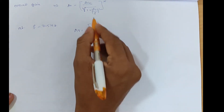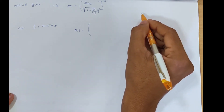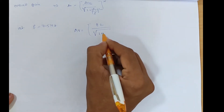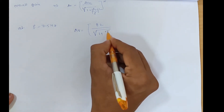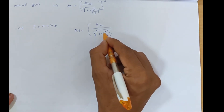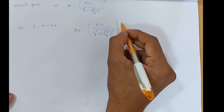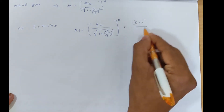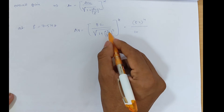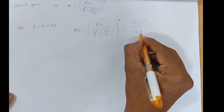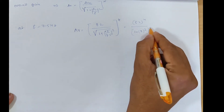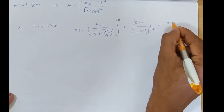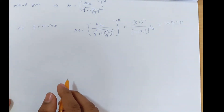AV = AVM = 8.2, raised to power 4, divided by √(1 + (FL1/f)²)^n. With FL1 = 15 Hz and f = 7.5 Hz, the ratio FL1/f = 2. Simplifying: AV = 8.2^4 ÷ √(1 + 4)^4. We get approximately 179.58.